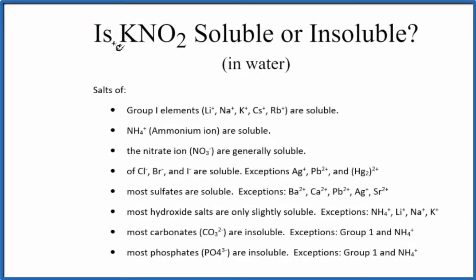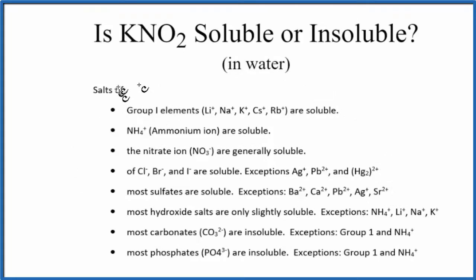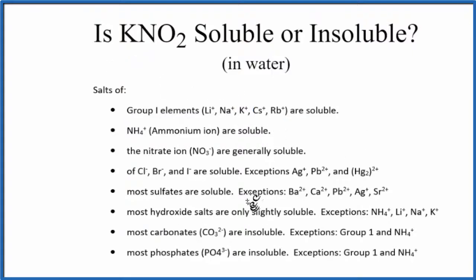In this video we'll look at whether potassium nitrite, KNO₂, is soluble or insoluble in water. The short answer is it's soluble in water, and we can use these solubility rules here to figure that out. The first rule states that group one elements on the periodic table are soluble, and since we see the potassium ion in KNO₂, it's going to be soluble in water according to our rules.